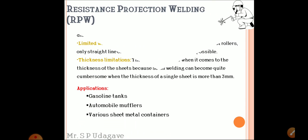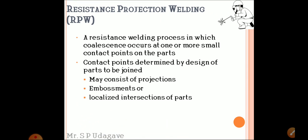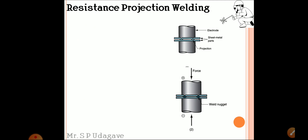Resistance projection welding is a process in which joining occurs at one or a few small contact points on the parts. The contact points are determined by the designed part to be joined, which may consist of projections - one sheet has projections, embossments, or localized intersections. Figure one shows one sheet metal, the upper one, that has the projections.